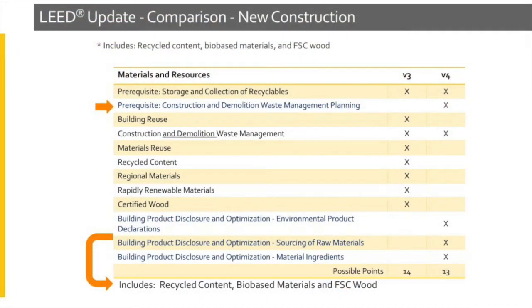This chart shows us the differences between LEED version 3 and version 4, marked by the X's on the chart, and the introduction of construction and demolition waste management planning as now a prerequisite. You also see where all of the individual attributes for building reuse or recycled content have now been folded into the building product disclosure and optimization credits, of which there are three: environmental product declarations, sourcing of raw materials, and material ingredients. This credit area has had one of the largest changes going from version 3 to version 4.